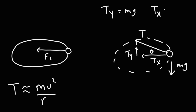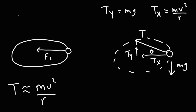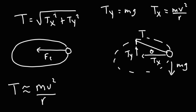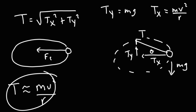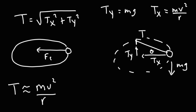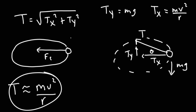When V is high, TX will be much greater than TY. So T, which is the square root of TX squared plus TY squared, will be approximately mv squared over r when V is high, since TX dominates. But when V is low and you have a significant angle, T is not going to be that — you need to use the full formula to get T.